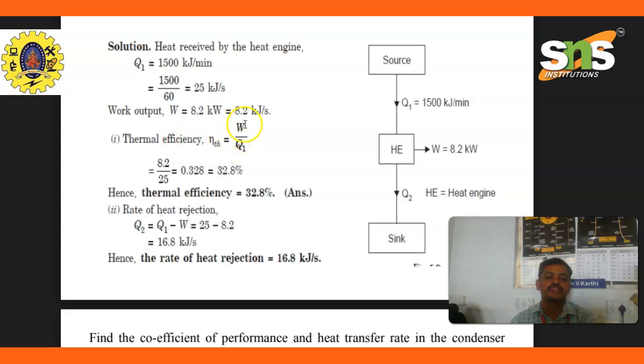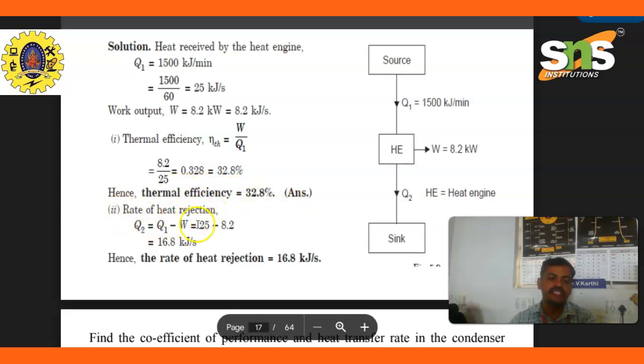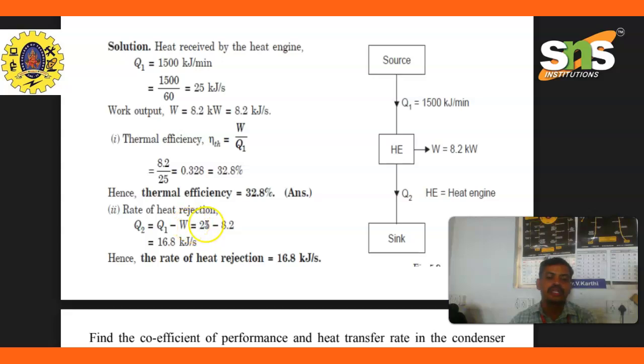The thermal efficiency equals work done divided by heat supply: 8.2 divided by 25 equals 32.8 percent. Hence, efficiency equals 32.8 percent.